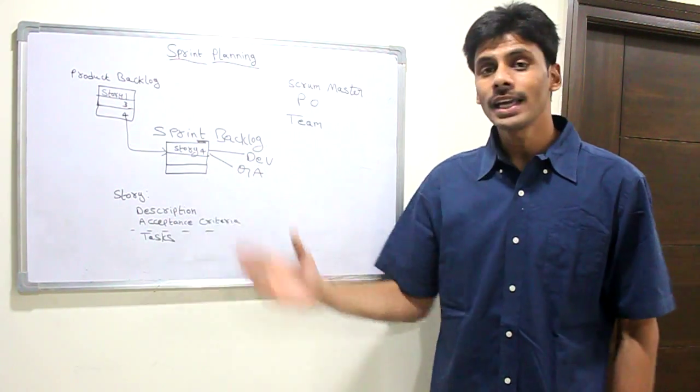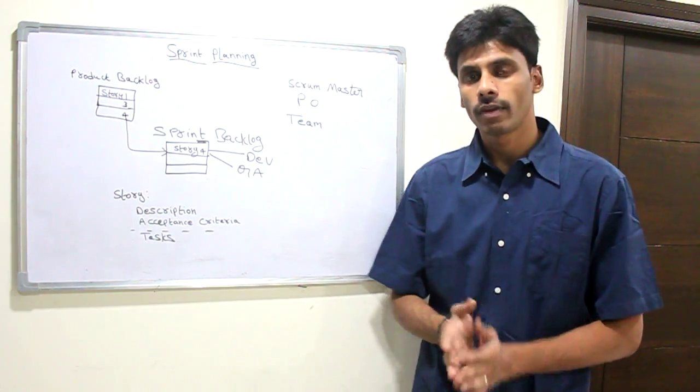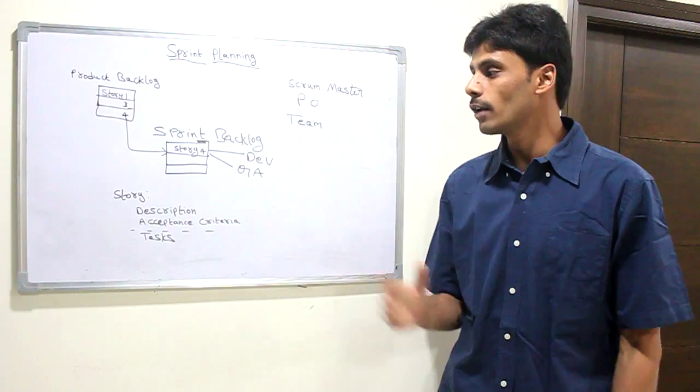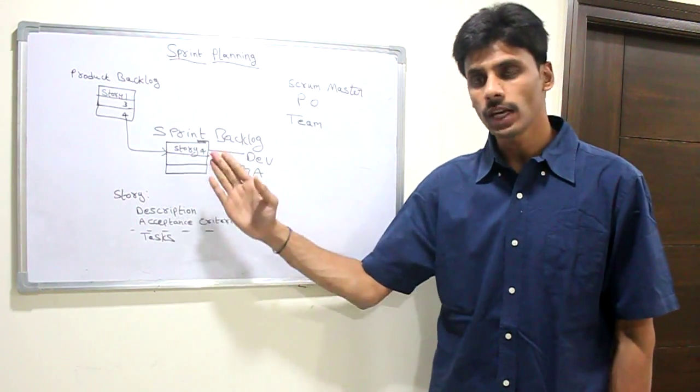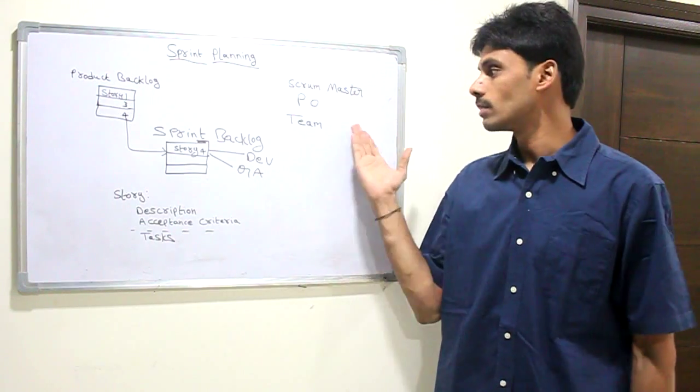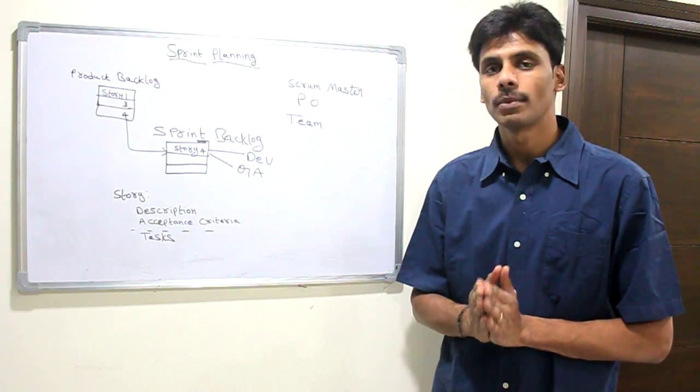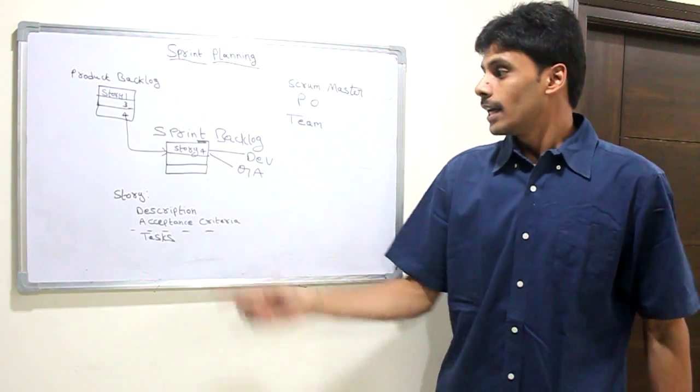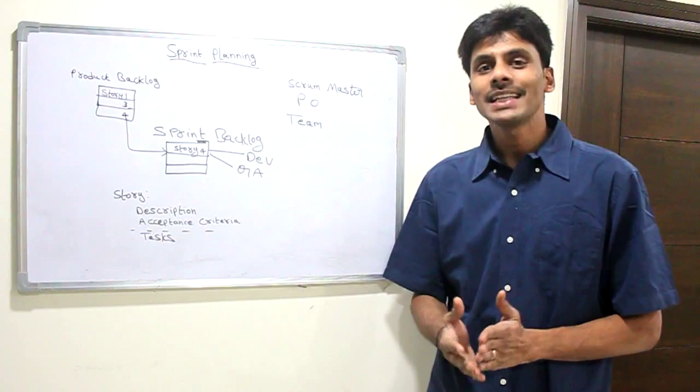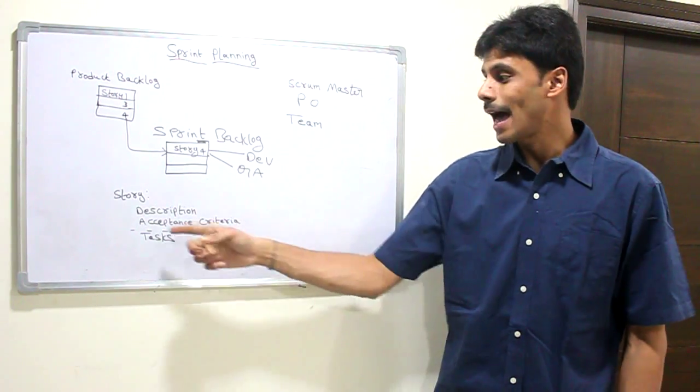A story is a demoable testable unit of work from requirements. At the end of each sprint we should finish the story, deliver it to QA, and QA should finish it and demo it to the product owner. If she accepts it, then that story is claimed to be done.